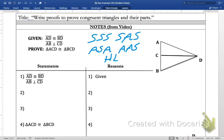Hypotenuse leg. And it only works with right triangles. The other four also work with right triangles, but they also work with other kinds of triangles as well. So, let's go ahead and dig into this proof here.